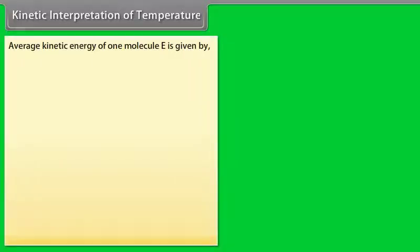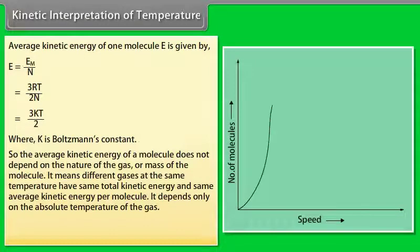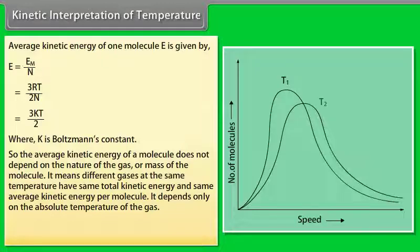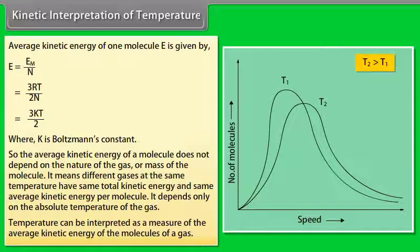Average kinetic energy of one molecule E is given by E is equal to Em upon N is equal to 3RT upon 2N is equal to 3KT by 2, where K is Boltzmann's constant. So the average kinetic energy of a molecule does not depend on the nature of the gas or mass of the molecule. It means different gases at the same temperature have same total kinetic energy and same average kinetic energy per molecule. It depends only on the absolute temperature of the gas. Temperature can be interpreted as a measure of the average kinetic energy of the molecules of a gas.